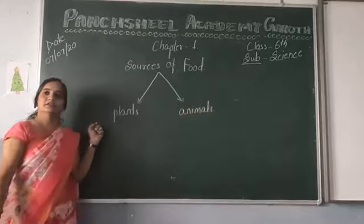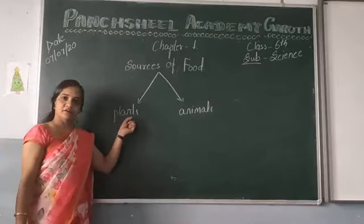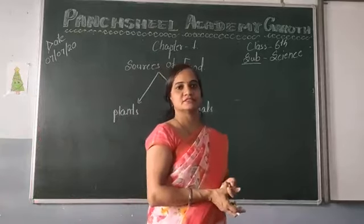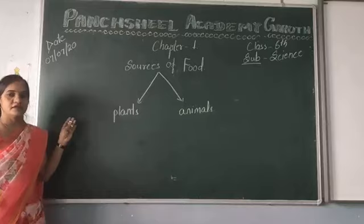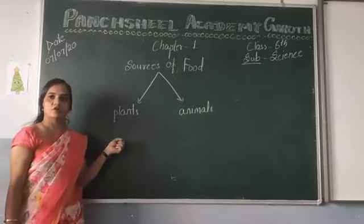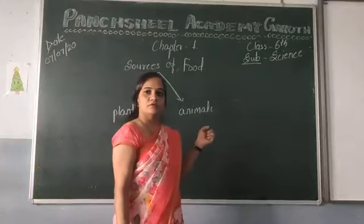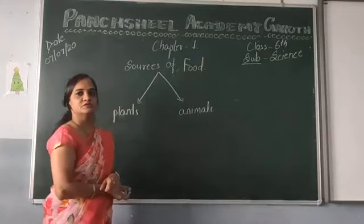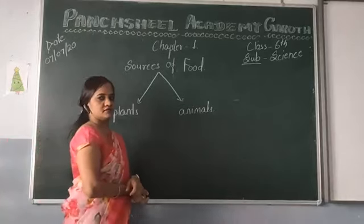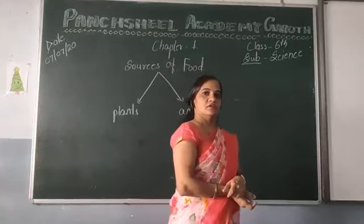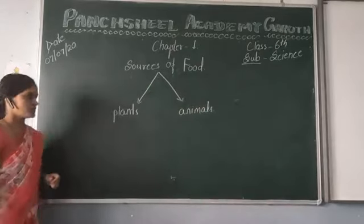The ingredients obtained from plants are cereals, pulses, spices, and others. The ingredients or food items obtained from animals include eggs, milk, meat, etc. These are the food items which are obtained from animals.